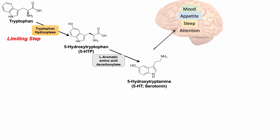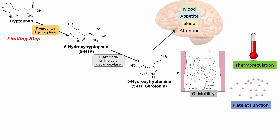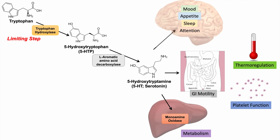When serotonin has been produced, it acts on a variety of receptors in the brain to modulate mood, appetite, sleep, and attention. It also regulates gastrointestinal motility, is involved in thermoregulation, and plays a role in platelet function. Serotonin is metabolized in the liver by monoamine oxidase. MAOIs inhibit this enzyme and thereby prevent serotonin breakdown, leading to increased serotonin levels. Similarly, 5-HTP increases serotonin levels, and SSRIs increase serotonin within the synaptic cleft.